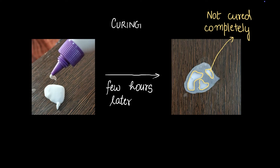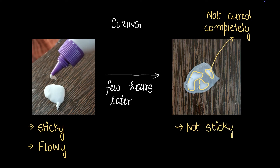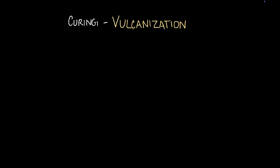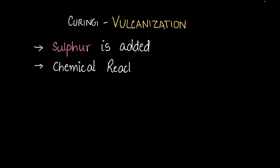We need a similar curing process for rubber. During mixing and kneading, the rubber becomes sticky and flowy. To cure rubber, we use a method called vulcanization — the most popular curing method for rubber. In vulcanization, sulfur is added to the rubber, triggering a chemical reaction that makes it hard with the desired properties.